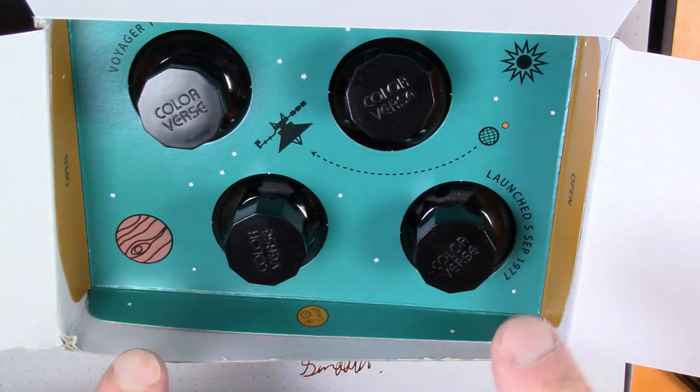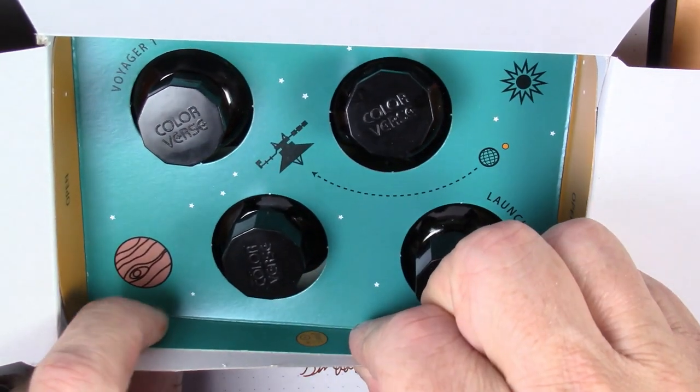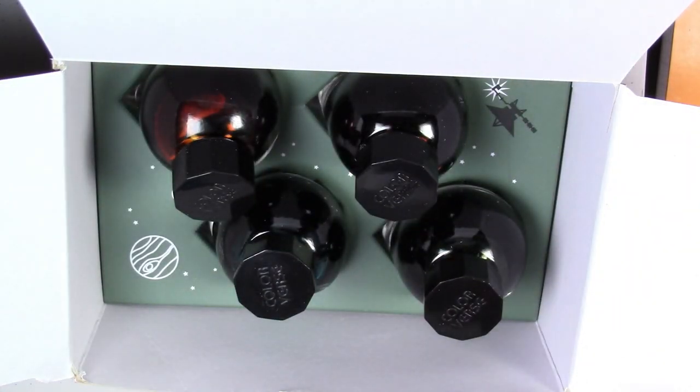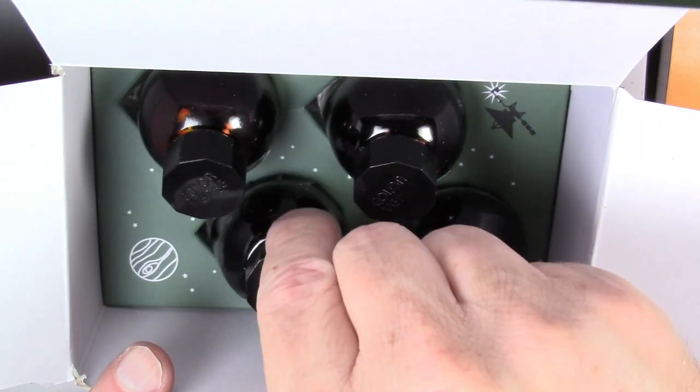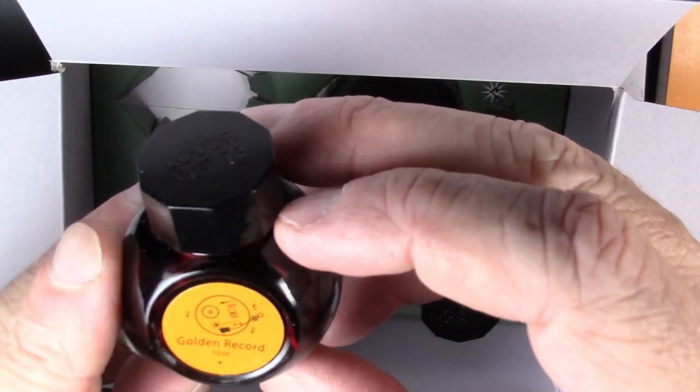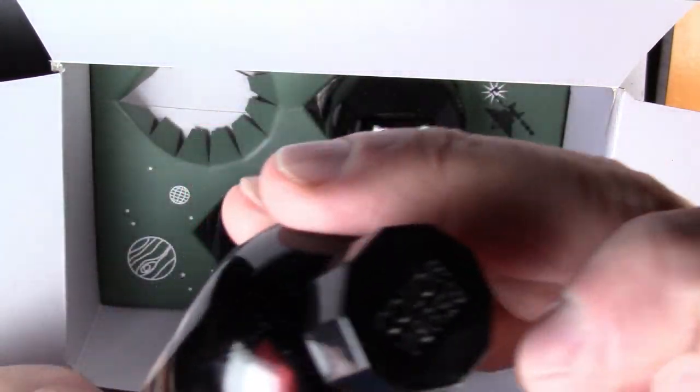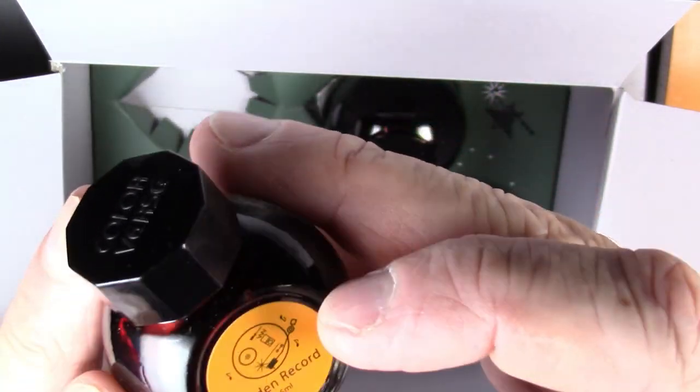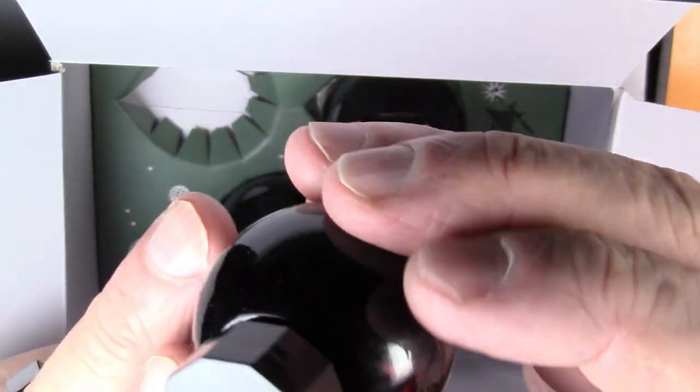And then we get to the actual bottles themselves. They are cradled with this little paper protector, and then they each sit in their own little spot here. And each of these bottles is pretty cool. The shape, it's like this teardrop-shaped bottle. It's pretty neat. And this is the one we used today, which was the Golden Record.